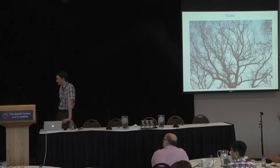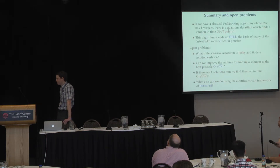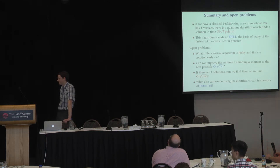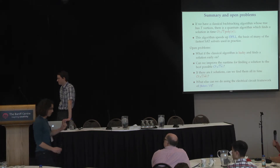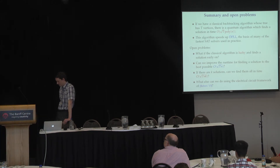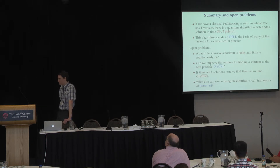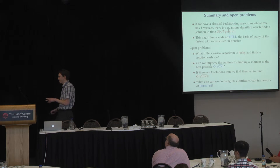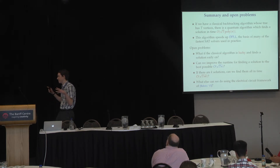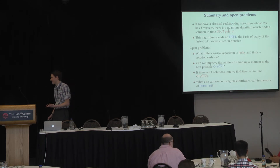Regarding the first question about the lucky classical algorithm — is there a way to chop up the tree and search only a subtree with two, then four, then eight, then 16, then 32 vertices, and so on? Well, that's the interesting thing, because it's not obvious how to do this.